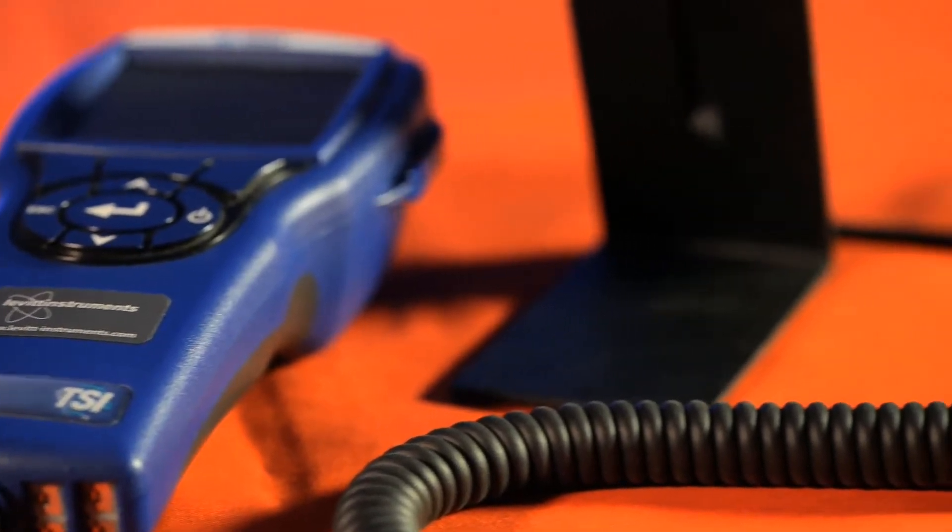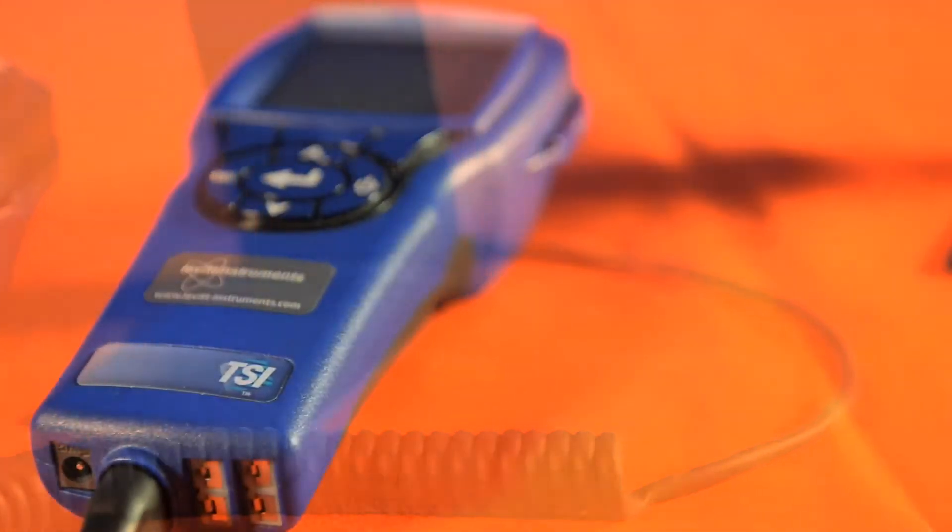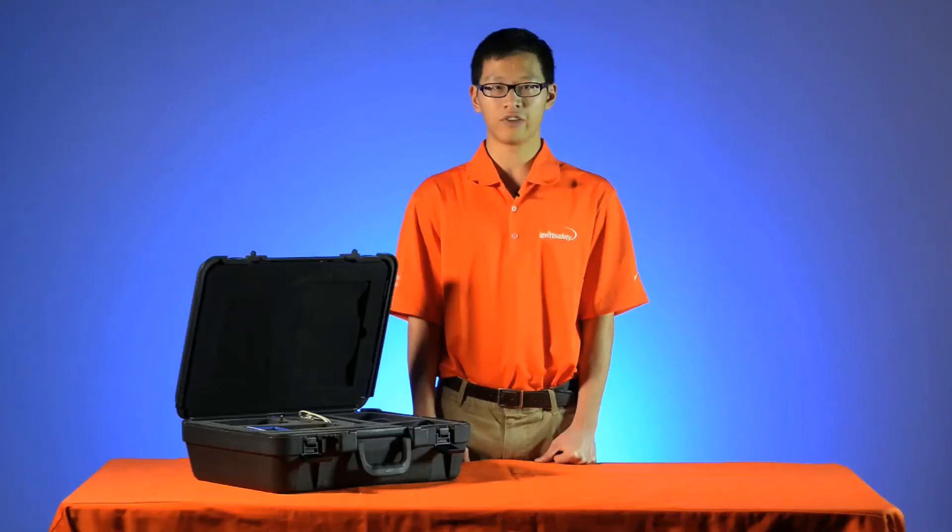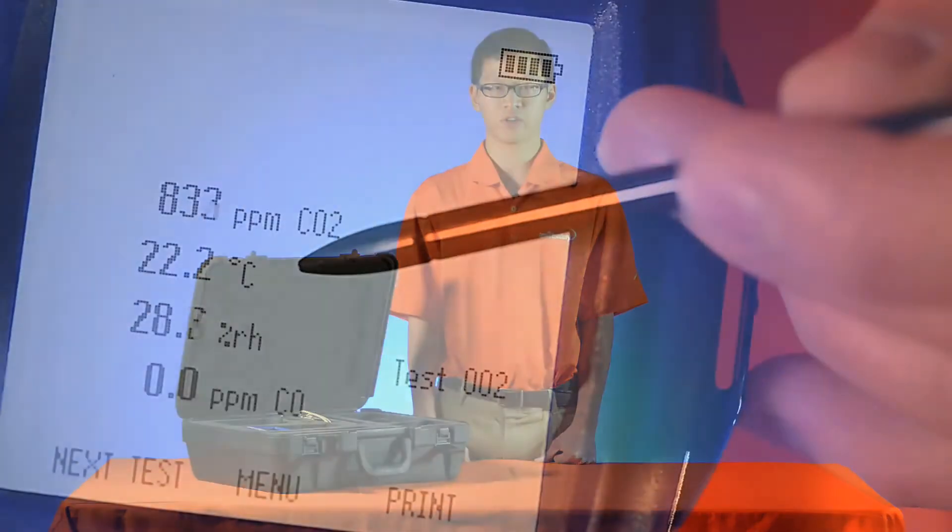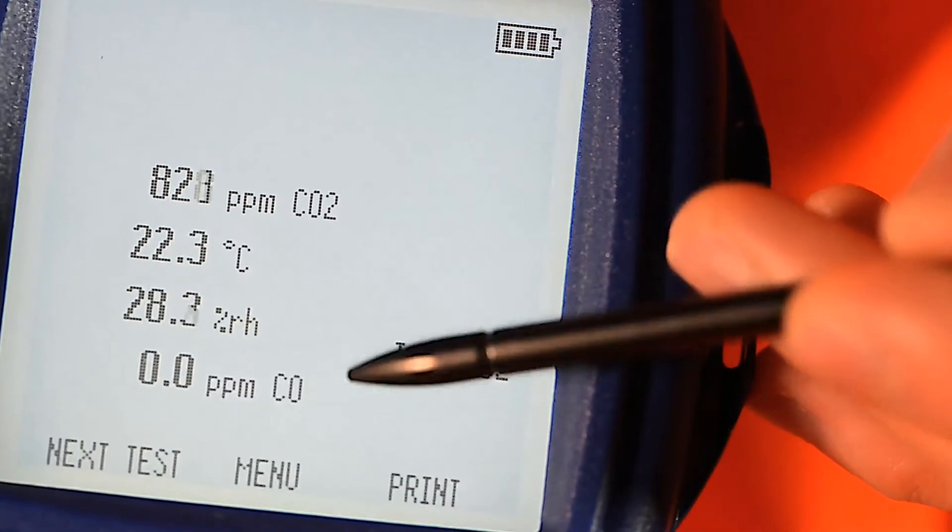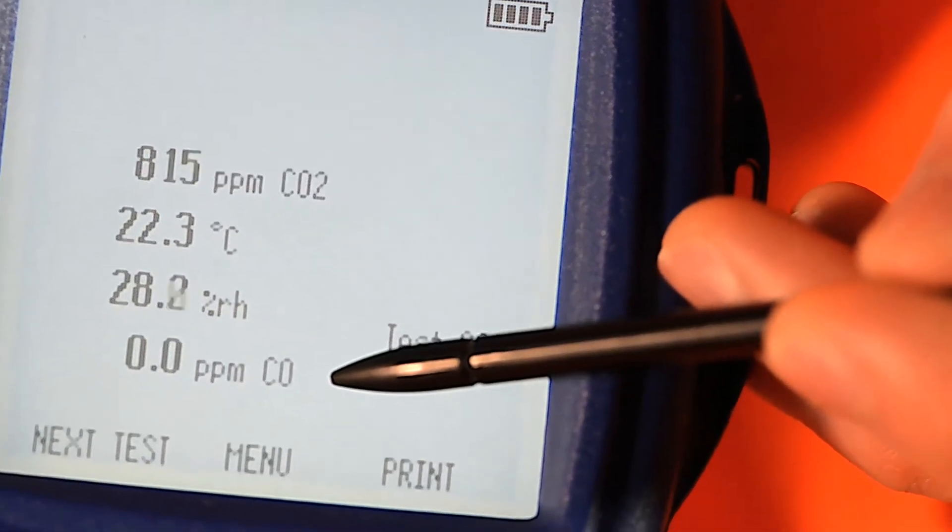Today we will be presenting one of our most popular rental items, the TSI Q-Track indoor air quality instrument. It is able to simultaneously measure and record temperature, relative humidity, carbon monoxide, and carbon dioxide levels.